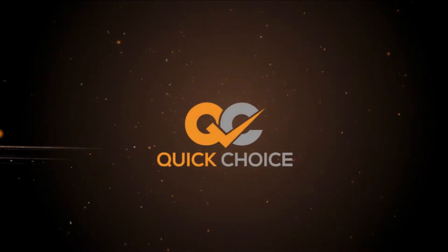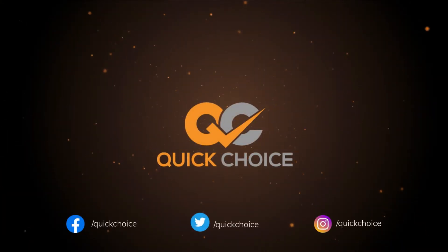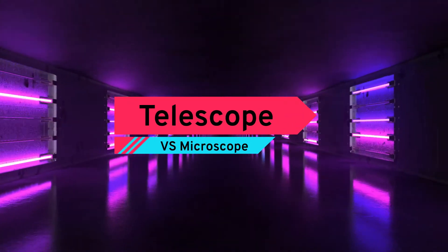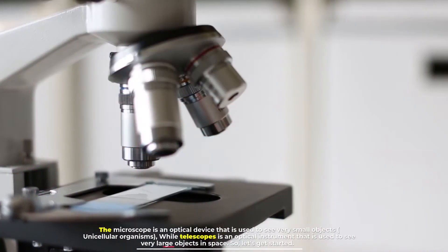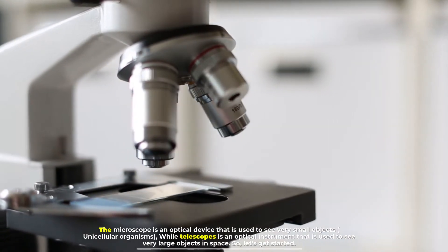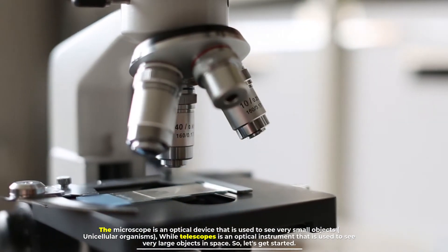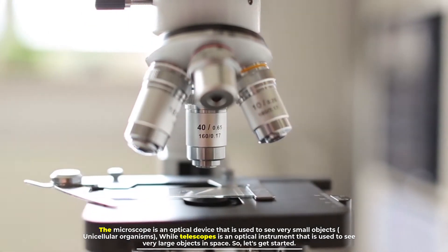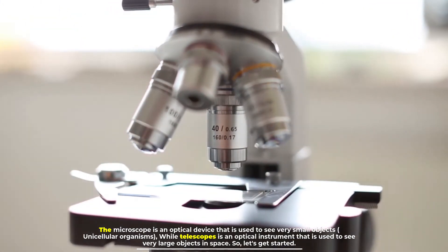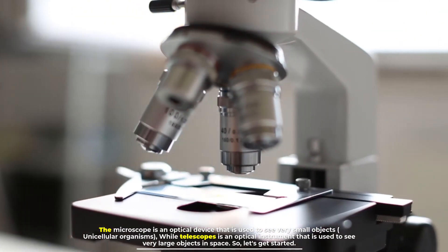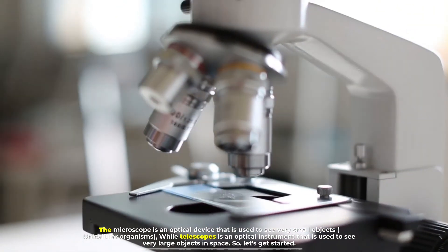Telescope versus microscope. The microscope is an optical device that is used to see very small objects, unicellular organisms, while a telescope is an optical instrument that is used to see very large objects in space. So let's get started.